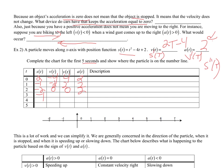At T=3: position gives 9 minus 12 plus 2 = negative 1. Velocity: 6 minus 4 = 2. Speed is 2, acceleration is 2. At T=4: 16 minus 16 plus 2 = 2. Velocity: 8 minus 4 = 4. Speed is 4, acceleration is 2. At T=5: 25 minus 20 plus 2 = 7. Velocity: 10 minus 4 = 6. Speed is 6, acceleration is 2.